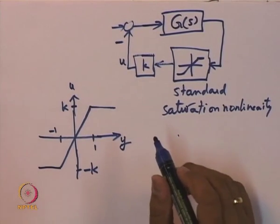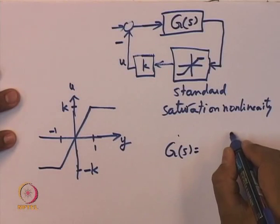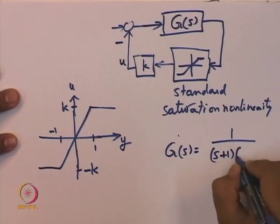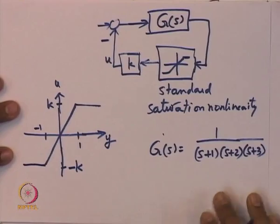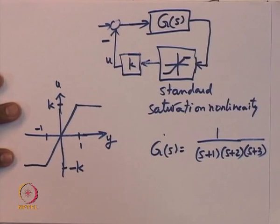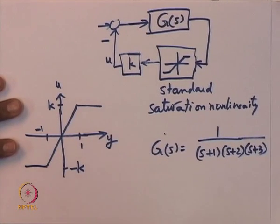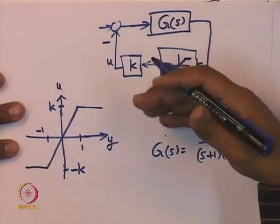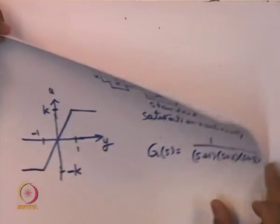Let us look into whether there can exist periodic solutions. Let us take an example: G(s) = 1 / ((s+1)(s+2)(s+3)). Let us take this particular transfer function and see for what value of k one might expect periodic orbits. For doing this, we will use some linear systems theory — we will use the Nyquist plot and Nyquist criteria for stability. From that, we will find a value of k beyond which we expect periodic orbits rather than instability.